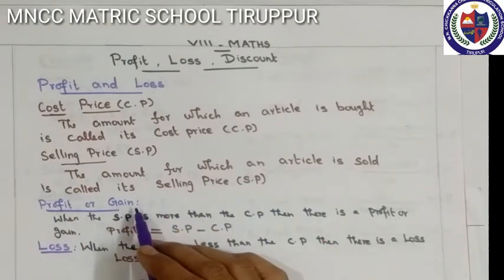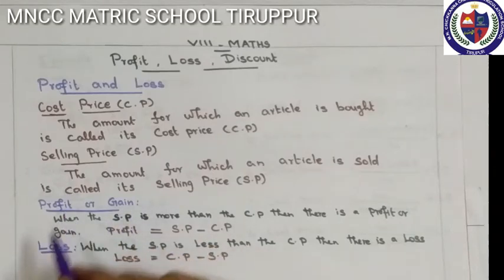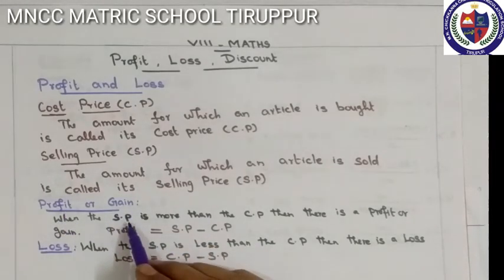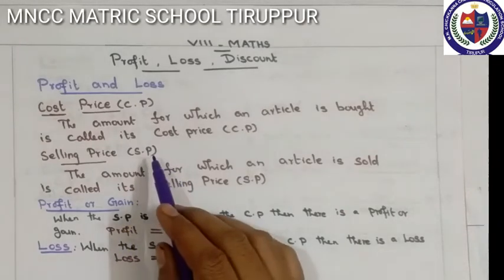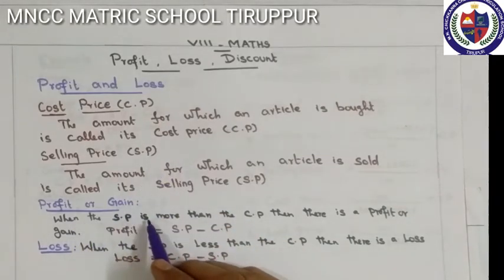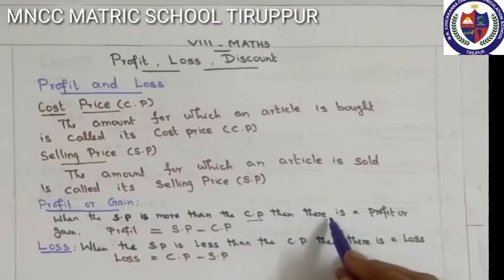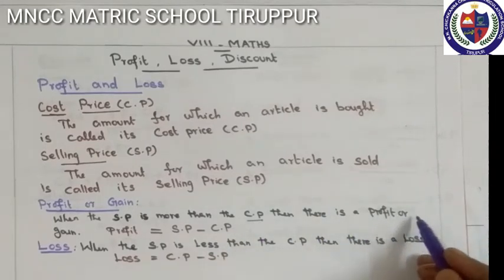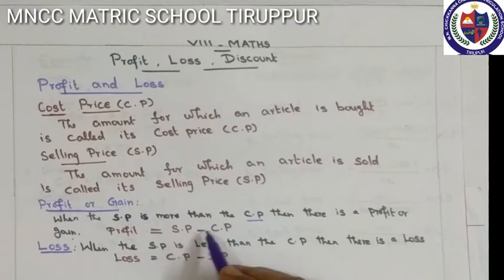Profit, otherwise called Gain. When the Selling Price is more than the Cost Price, then there is a Profit or Gain. The formula: Profit equals Selling Price minus Cost Price.